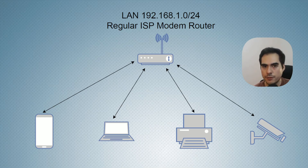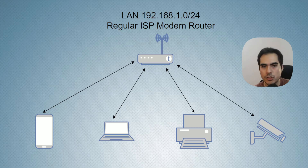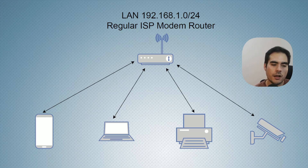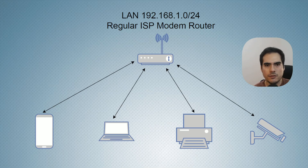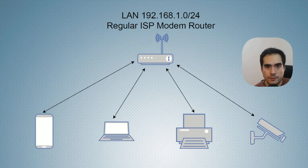You can see here we have a few devices connected to the modem router. This is a common network, your local area network. All the devices will have internet connectivity and they will also be able to see each other on the same network. If you want to separate things — maybe have your security systems or IoT devices on other networks — with this single modem router you won't be able to, because you only have one LAN and cannot segment the network. This can create security and network performance issues.